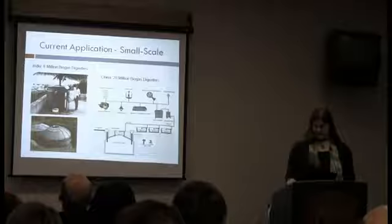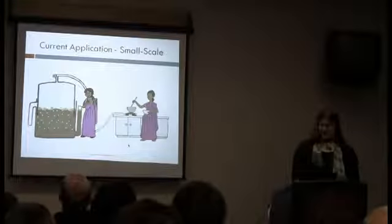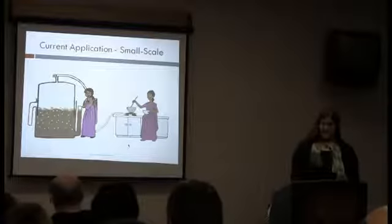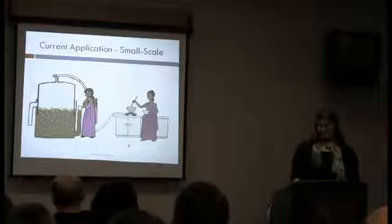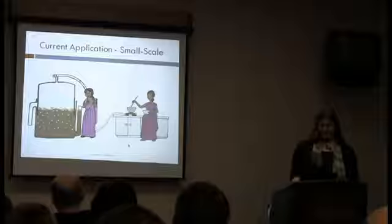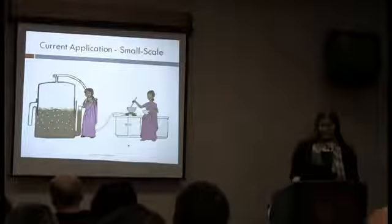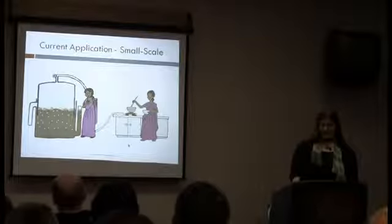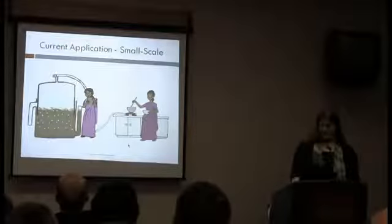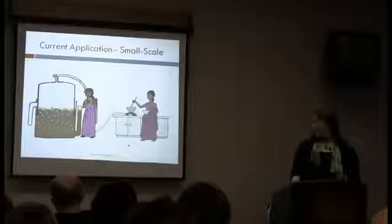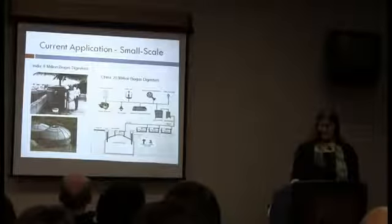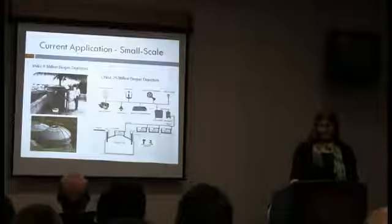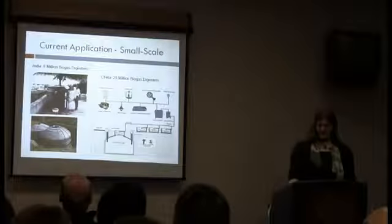So right now, there are digesters all across the world, mostly in India. This is an Indian design that produces enough methane to run a household. This bacteria, basically what happens is she feeds them the food scraps from her cooking, and they produce methane, which raises the top part of the design, and then she cooks with that methane. Now, you can't just keep adding to a closed system, so the tube on the very right is an effluent tube, where the overflow comes out. There are 8 million digesters following this design in India, and 20 million at a slightly different but similar design in China. These just mostly provide cooking and heating fuel for these families.